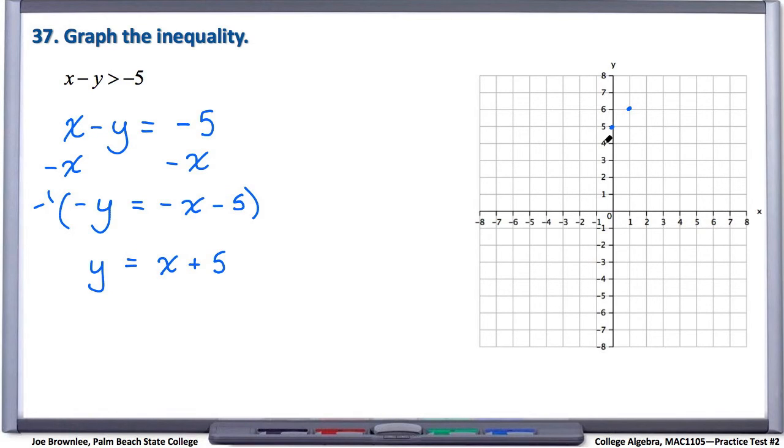But before we connect our two points, we've got to go back to the original inequality and see what kind of line we're going to use. Recall that if your inequality is less than or equal to, greater than or equal to, you have to use a solid line. And if it's simply less than or greater than, you have to use a dashed line.